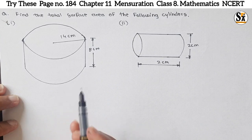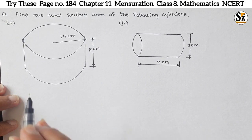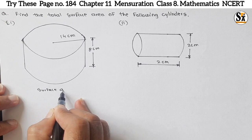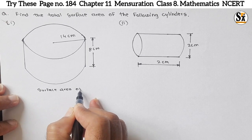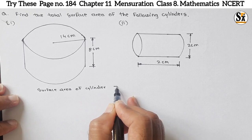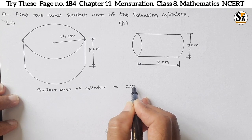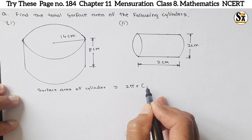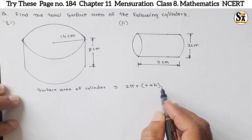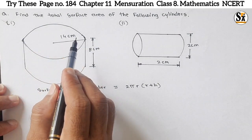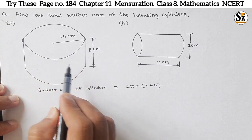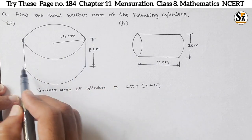Now we know the formula for surface area of cylinder. I will write here: surface area of cylinder is equal to 2πr(r+h). Now how is it derived? We know the surface area of this cylinder includes top surface area plus bottom surface area and this lateral surface area.